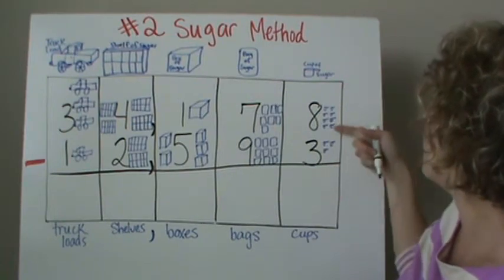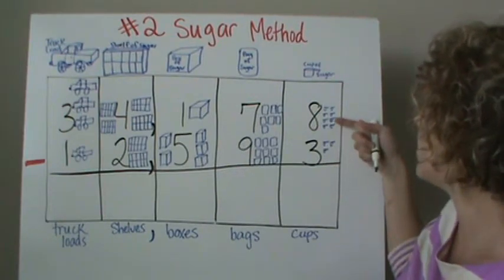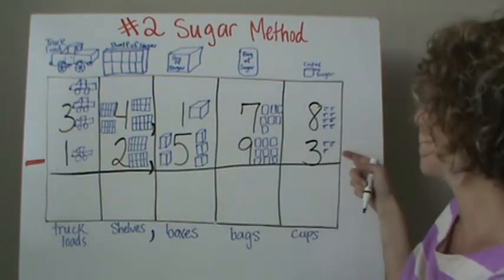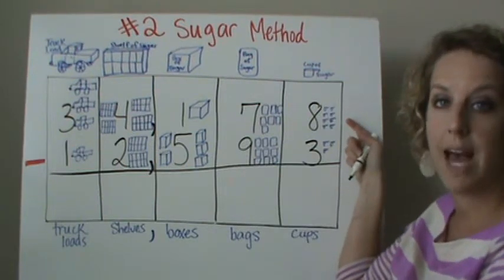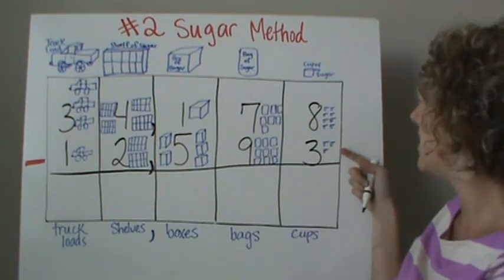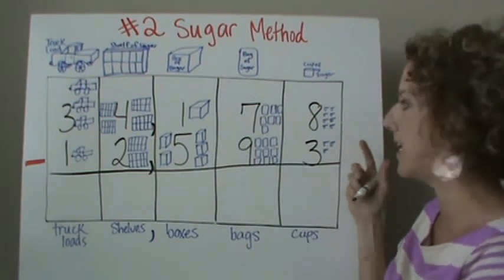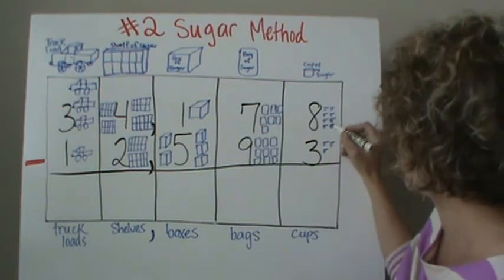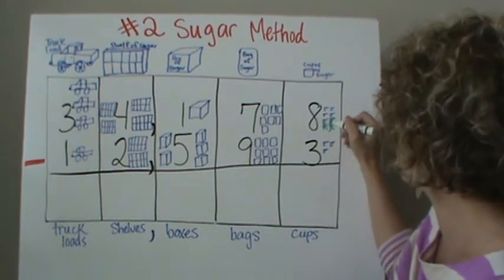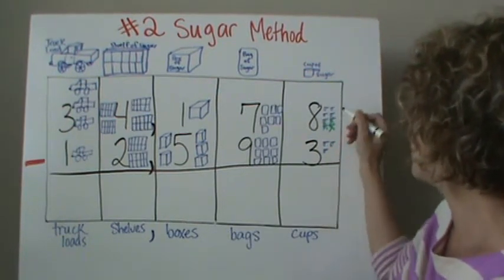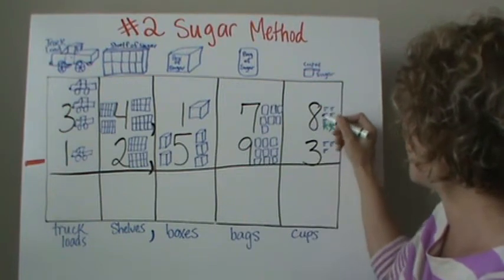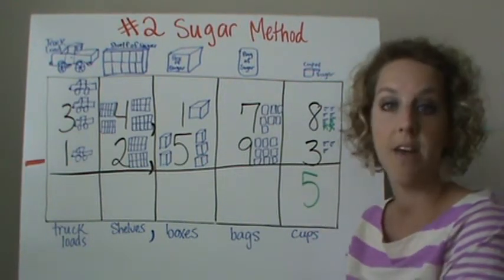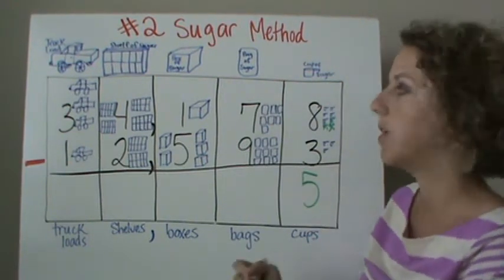We have eight cups of sugar and we need to subtract three cups. We have eight cups of sugar in the cabinet, and we only need to use three for our cake business today. So we can go ahead and do that. Eight minus three is five. We had enough there — we didn't have to regroup.